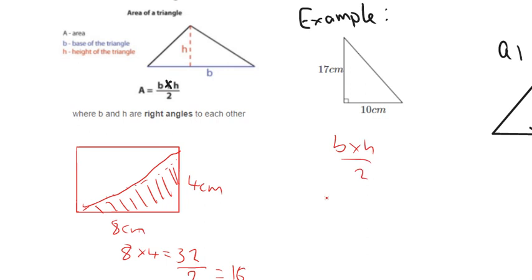So it would just be 17 multiplied by 10 and then divide by two. So 17 multiplied by 10 would be 170. Divide by two. And then the answer is going to be 85, so 85 centimetres squared.